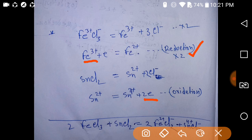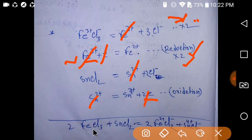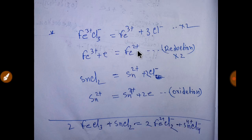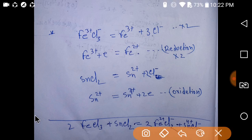To absorb two electrons we multiply the iron half-reaction by two, so the number of Fe³⁺ becomes two. Multiply that equation by two as well, then cancel the electrons. Two molecules of FeCl₃ plus SnCl₂ react; combining, we get two FeCl₂ — ferrous ion has two molecules so multiply by two — and Sn⁴⁺ with four chloride, giving SnCl₄. This is the balanced reaction.